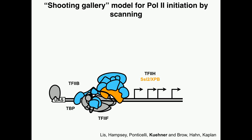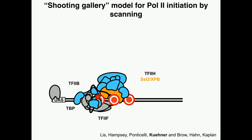The non-template and template strands have to be unwound to have access to the template. In Saccharomyces cerevisiae, the start site is not in this initially unwound region — the start sites are downstream of that region, and TF2H continues scanning. The shooting gallery model is that we imagine the Pol2 active site, which is fixed in position because it's bound to all the other GTFs holding it at the promoter — that's like a gun in a shooting gallery, one where you can only shoot straight ahead. The targets are going to move past the active site: TF2H translocates the targets and they come past the active site. That's why we call it a shooting gallery model.